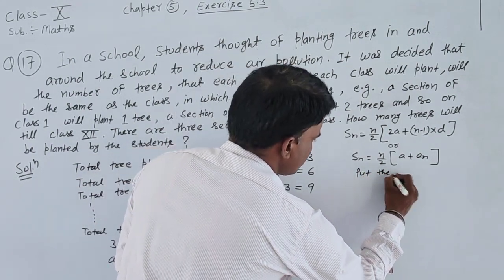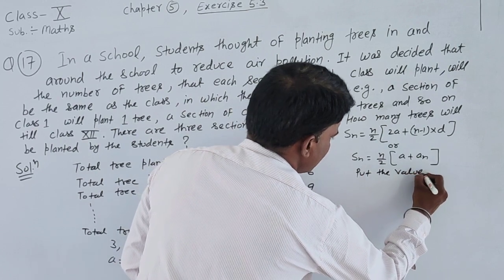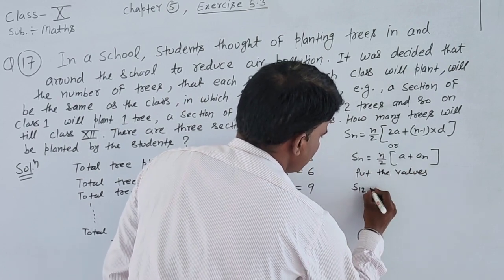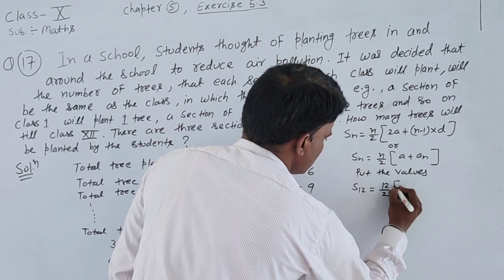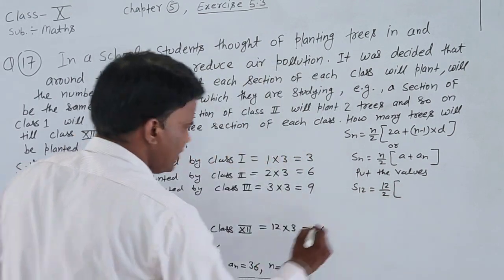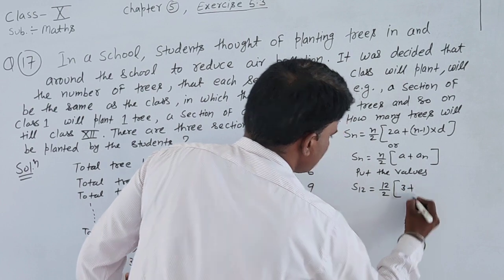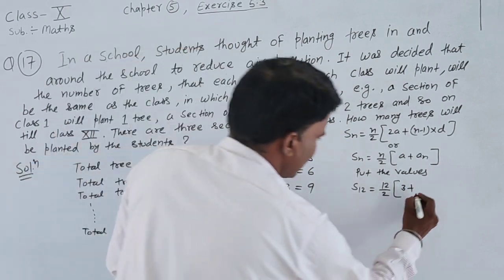The first term we have given is a equals 3, common difference is found as a_2 minus a_1, second term minus first term, 6 minus 3, which means d equals 3. The last term is 36 and the total number of terms is n equals 12.